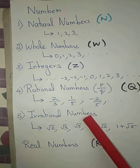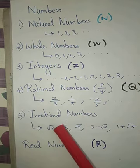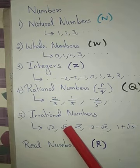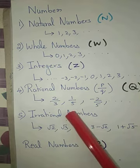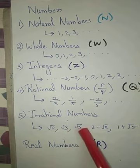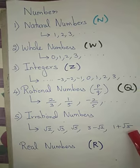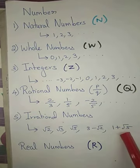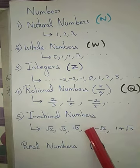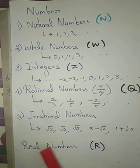Next we are going to see irrational numbers. Irrational numbers include root 2, root 3, root 5 and so on. Not only simple roots — numbers like 3 minus root 2 or 1 plus root 5, any number that has a root symbol attached to it, is called an irrational number.